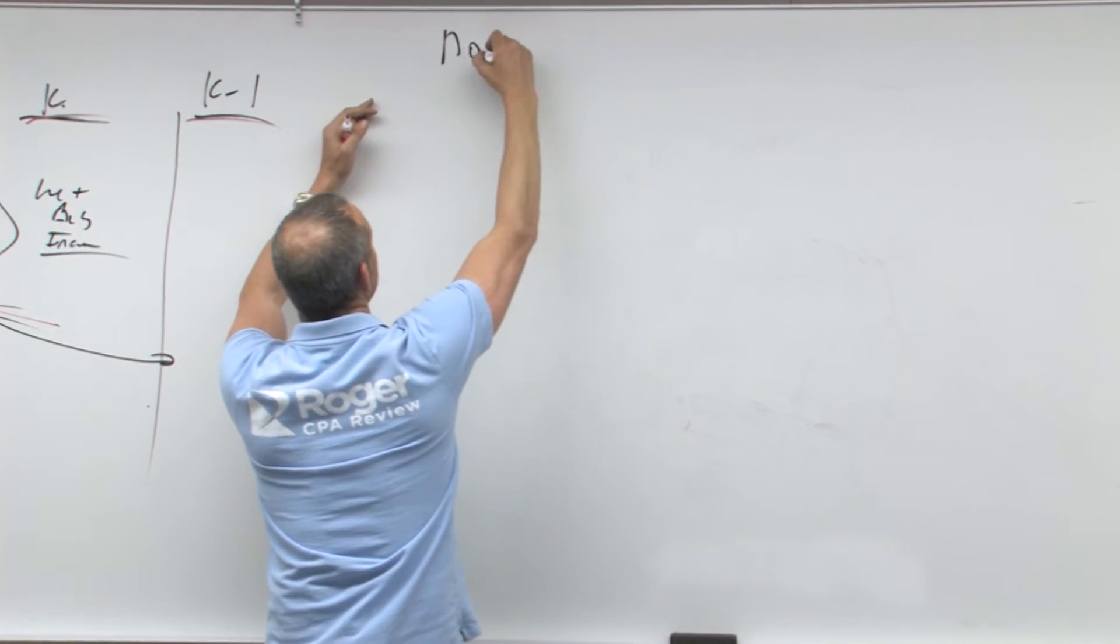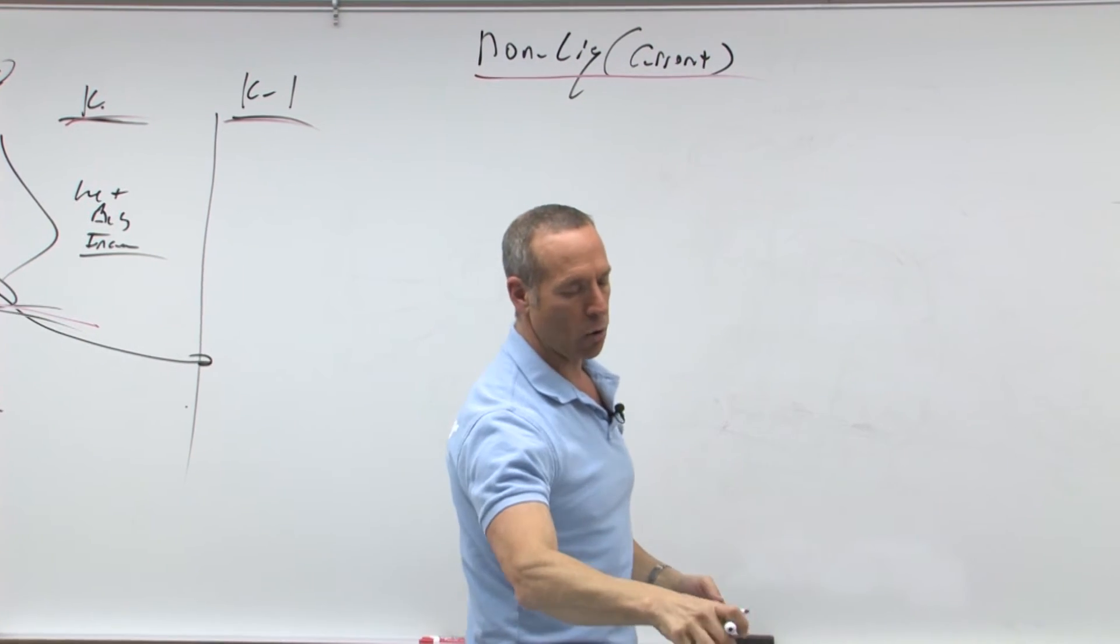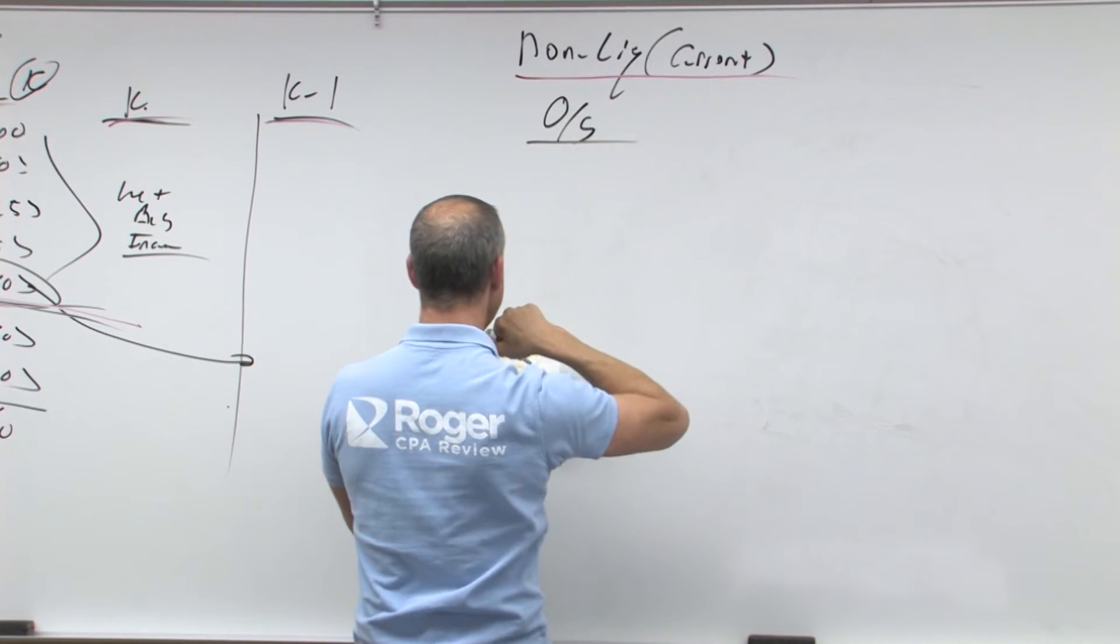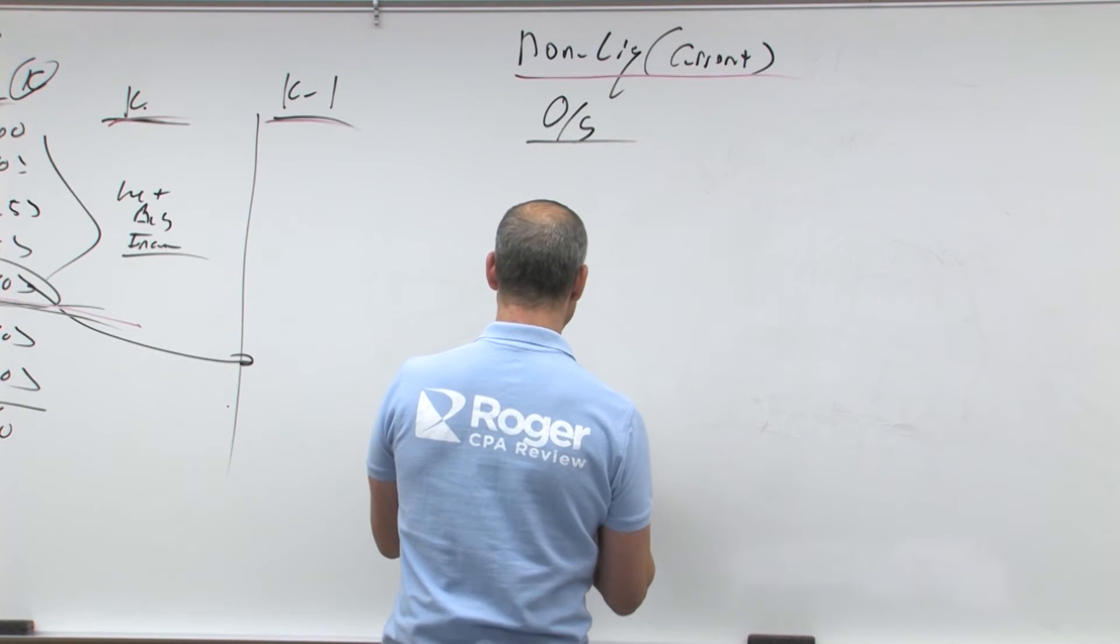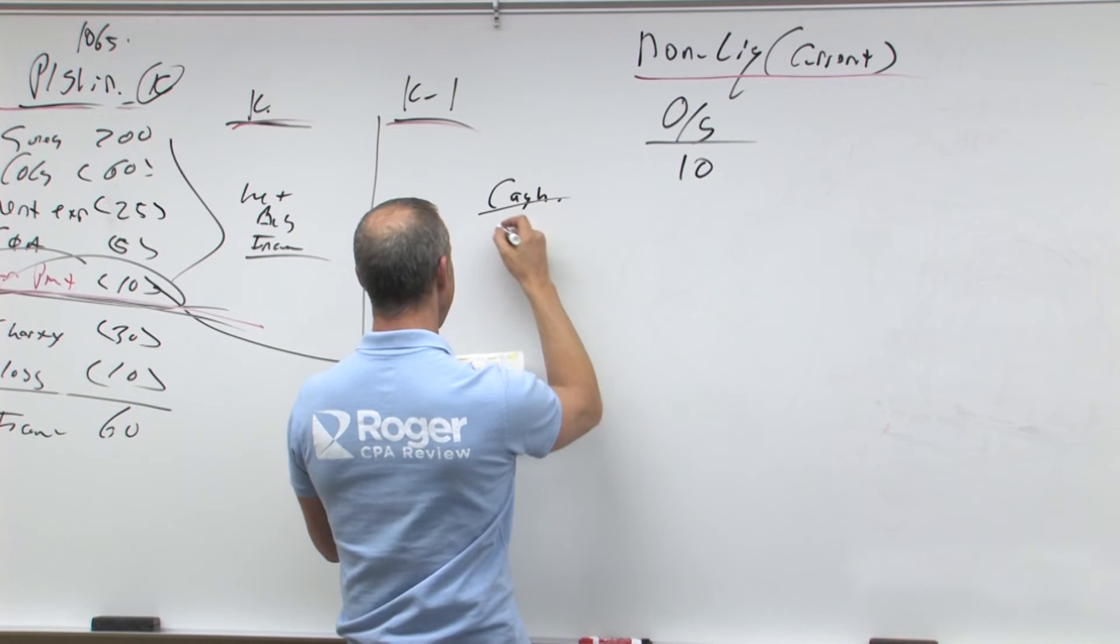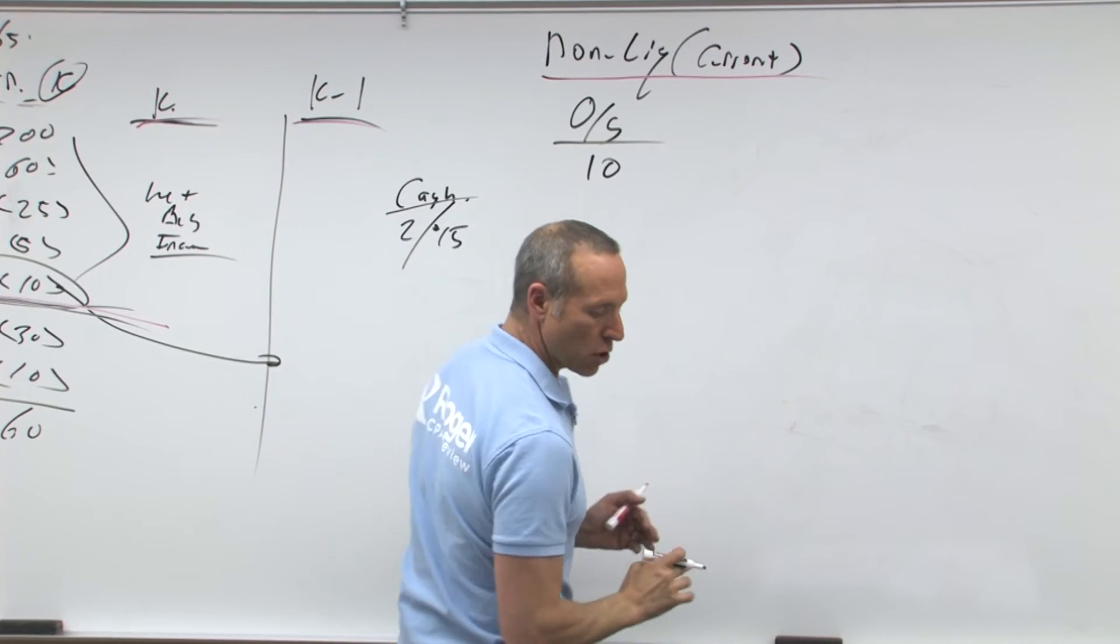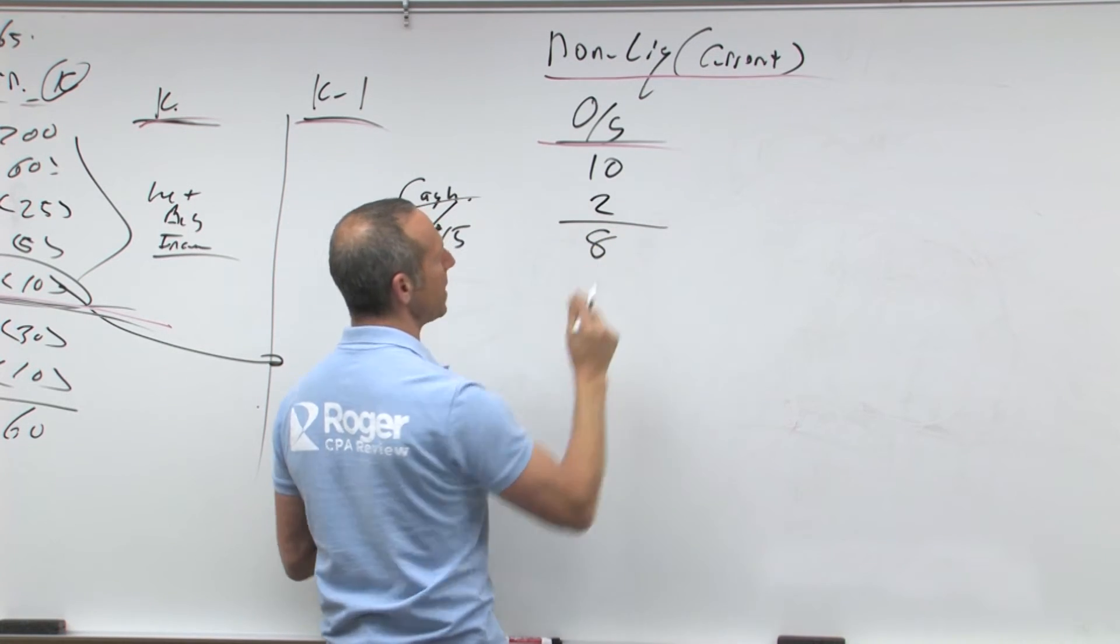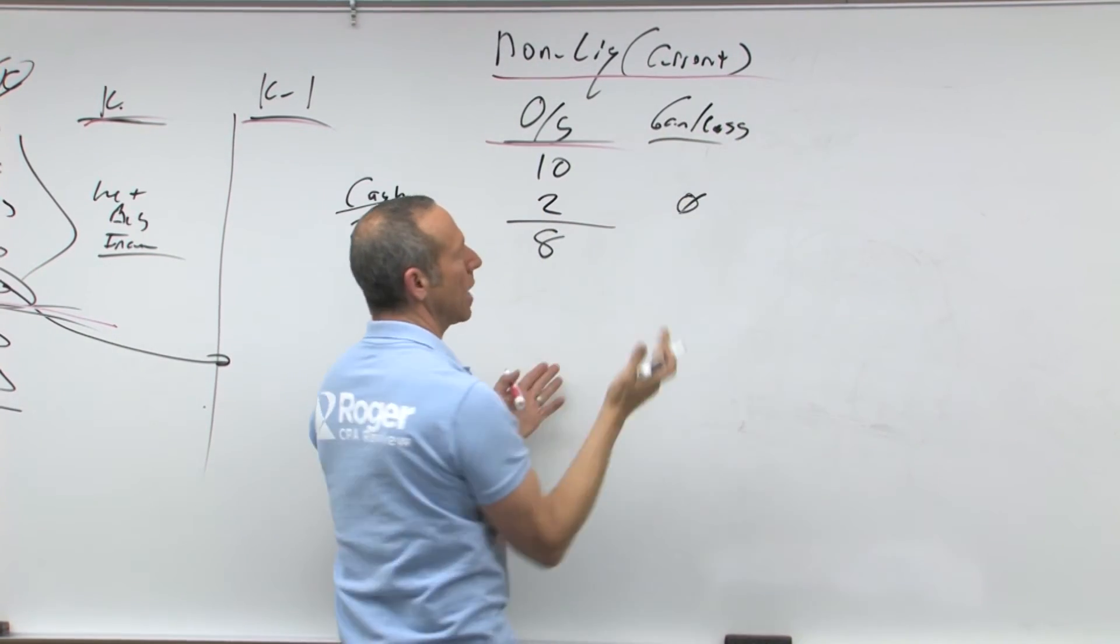So over here I'm going to do non-liquidating called a current distribution. We'll do this first. So, let's say for example, I have my outside basis. Let's say my outside basis in the partnership is $10. Let's say I'm getting cash. So in the first case I'm going to get cash of $2, in the second case I'm going to get $15. Okay. So in the first case I have an outside basis of $10, I'm going to get cash of $2. That means what's left, $8. So here is there any kind of gain or loss? No, because I still have a basis.